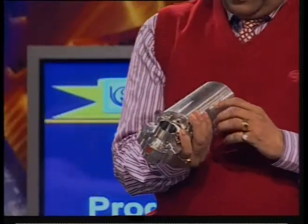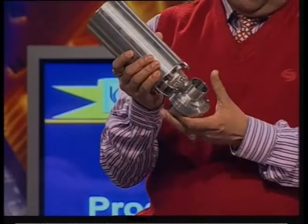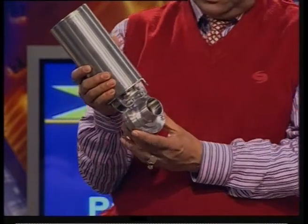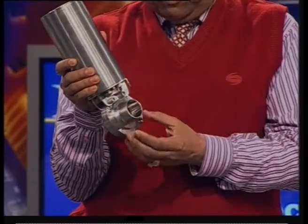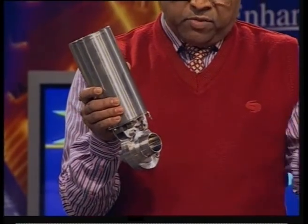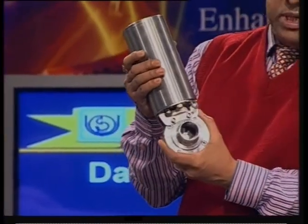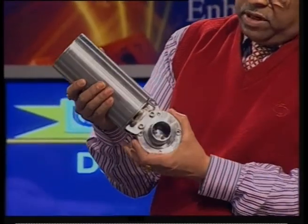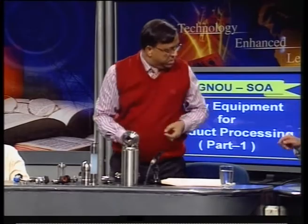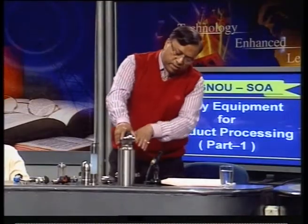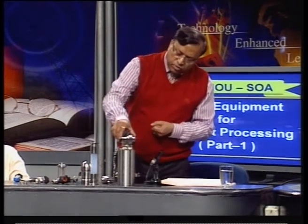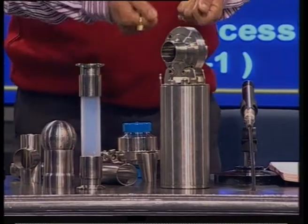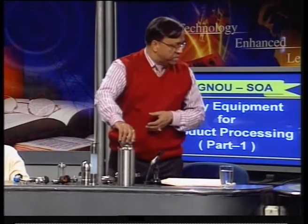Butterfly valves are used in every application in the dairy industry. Earlier we used to have plug valves; nowadays they are more or less replaced by butterfly valves. They are maintenance-free and you can use them from the reception to the milk powder section — for liquid milk lines, CIP lines, and all product application lines. You can have a handle or an actuator. If there is an air problem, you can remove the actuator in two minutes, put the handle, and operate it — no need to replace the total valve. This flexibility of the butterfly valve is a key advantage.